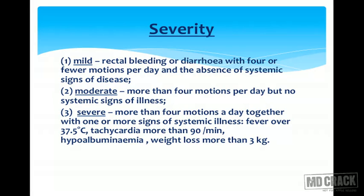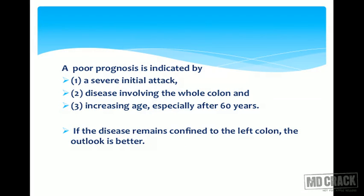In severity: mild ulcerative colitis has rectal bleeding or diarrhea with four or fewer motions per day and no systemic signs. Moderate has more than four motions per day but no systemic signs. Severe has more than four motions per day together with systemic signs — fever over 37.5°C, tachycardia more than 90 beats per minute, hypoalbuminemia, or weight loss more than 3 kg. Poor prognosis is indicated by severe initial attack, disease involving the whole colon, and increasing age especially after 60 years. If disease remains confined to the left colon, the outlook is much better.